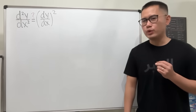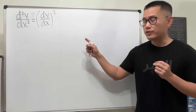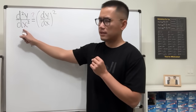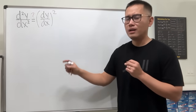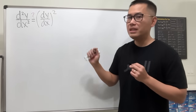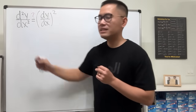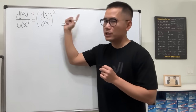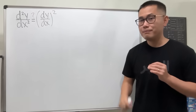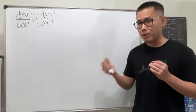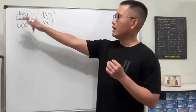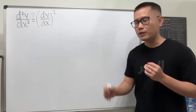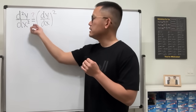I want to talk about this differential equation. On the left hand side we have d²y/dx², and on the right hand side we have (dy/dx) squared. Are they always equal? Well, they are not equal all the time, but they could be equal sometimes — for example, for a constant function. Today let's find all the functions where the second derivative equals the first derivative squared.